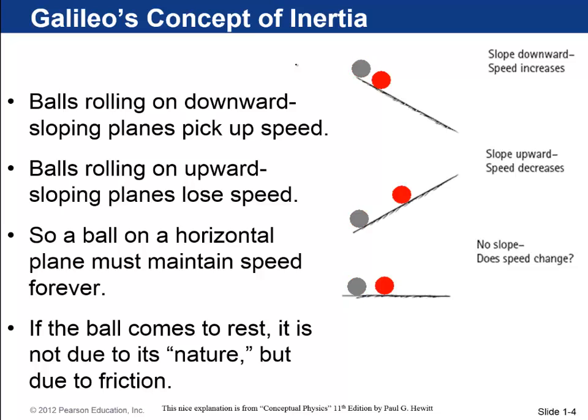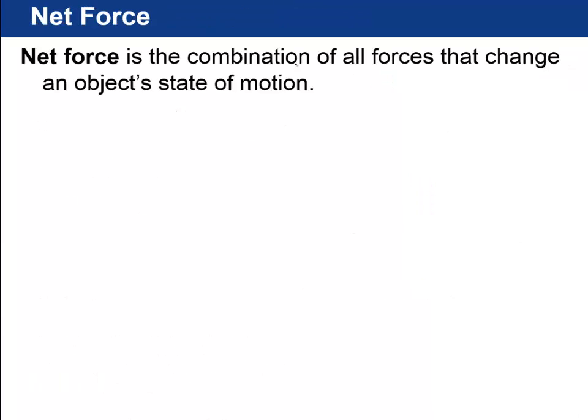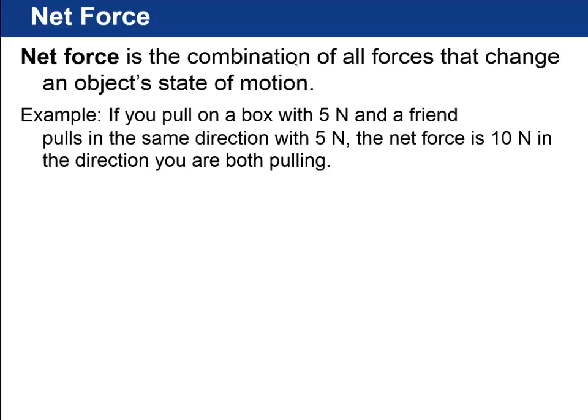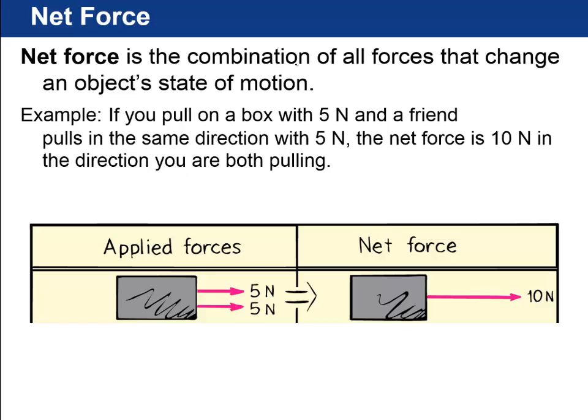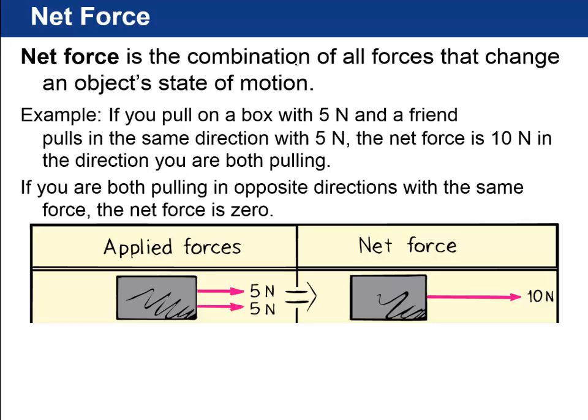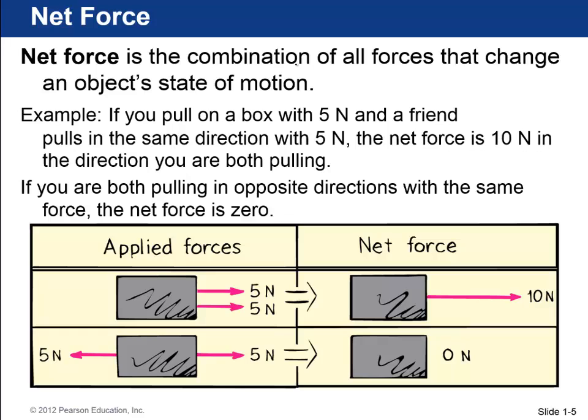And if it did come to rest, Galileo inferred that that's not because of its nature, but it was due to some friction forces between the ball and the surface. The friction force would be some kind of a net force. A net force is a combination of all the forces that change an object's state of motion. For example, if you pull on a box with 5 newtons and a friend pulls on the same box in the same direction also with 5 newtons, then you'd say the net force is 10 newtons in the direction that you're both pulling. If you're both pulling opposite directions, both with 5 newtons, then those forces can cancel and you can end up with a net force of zero.